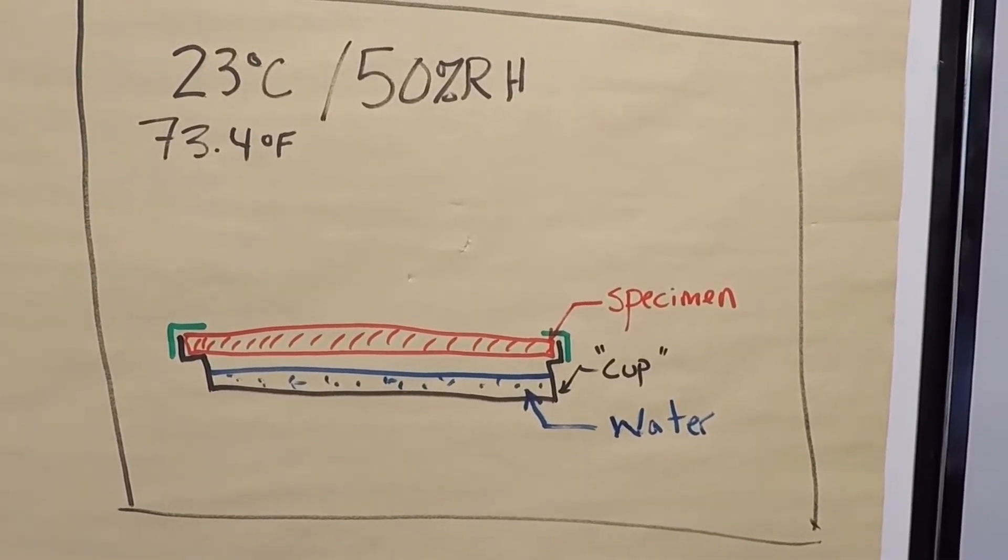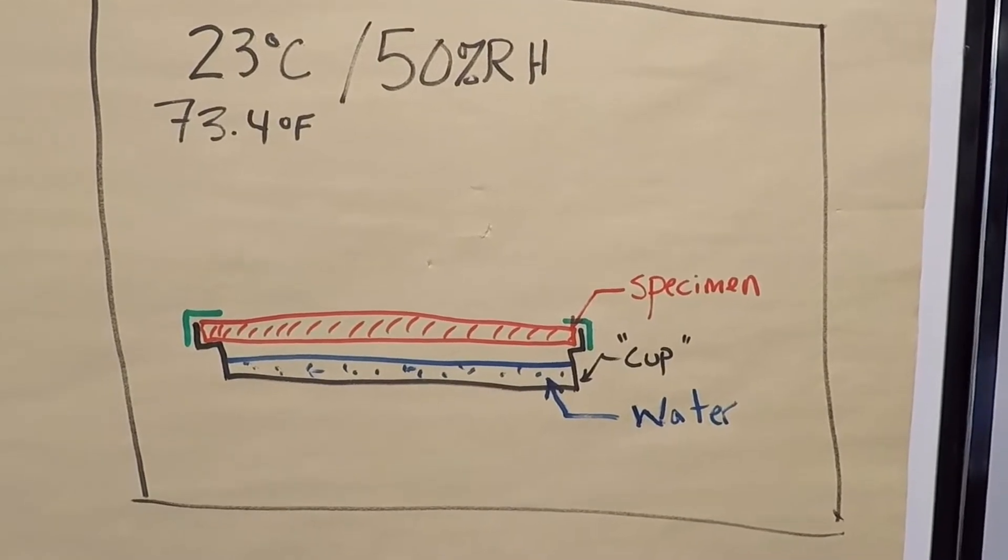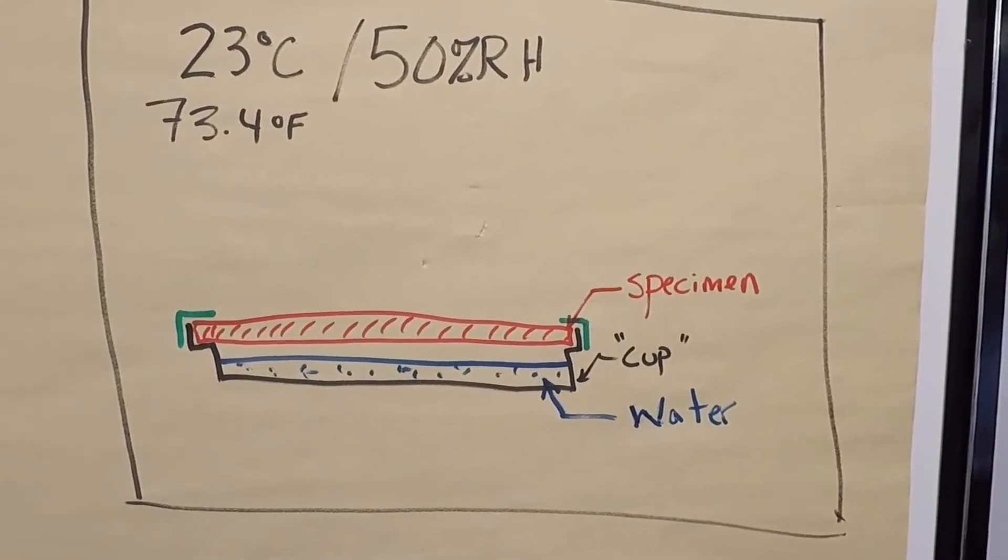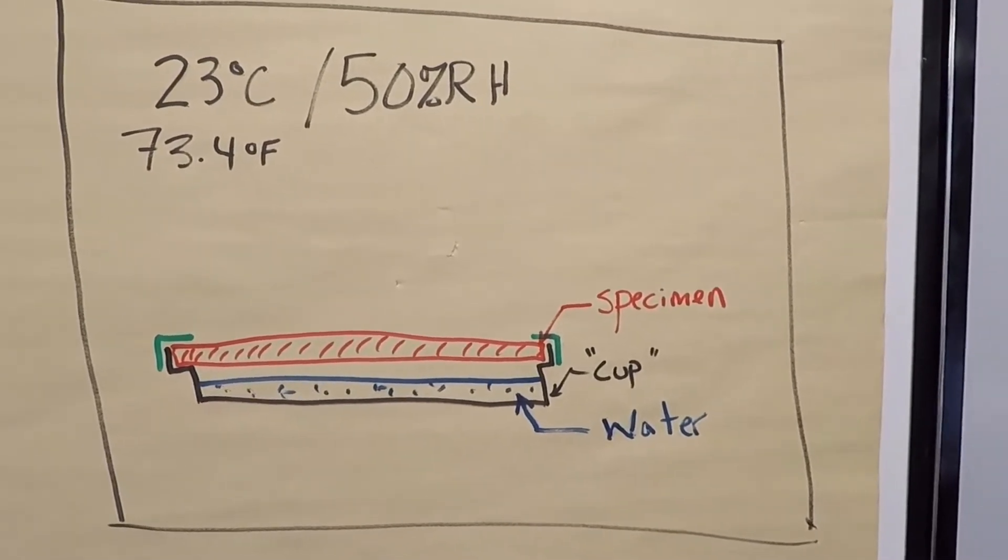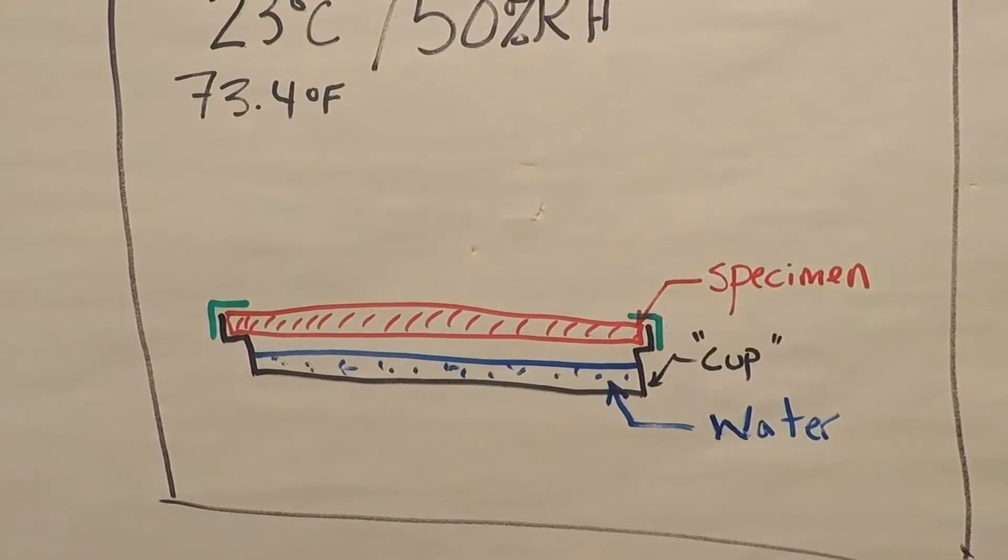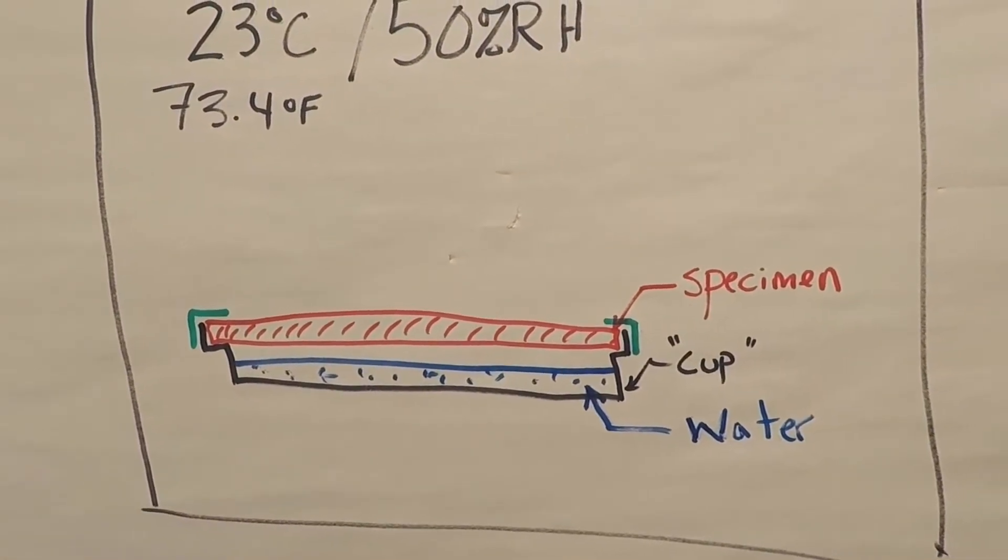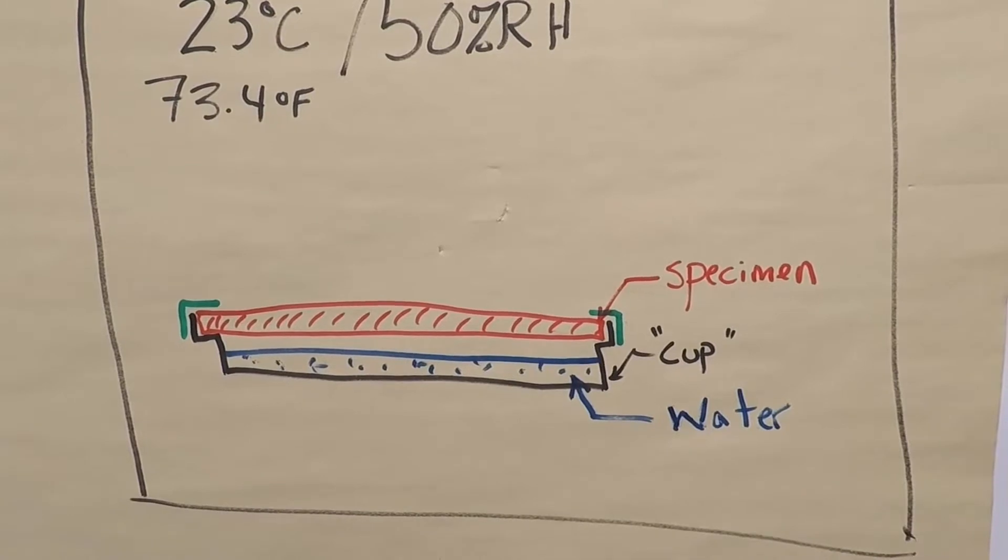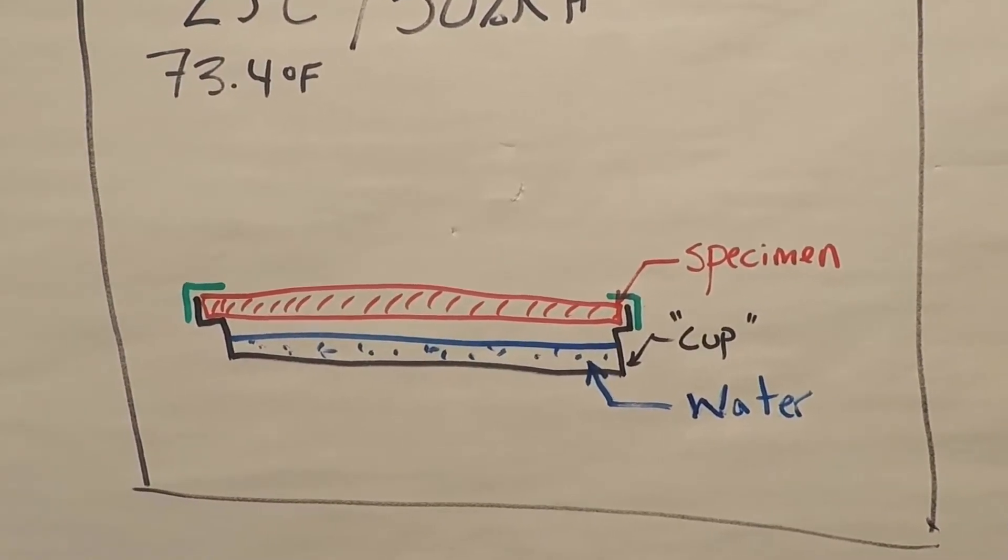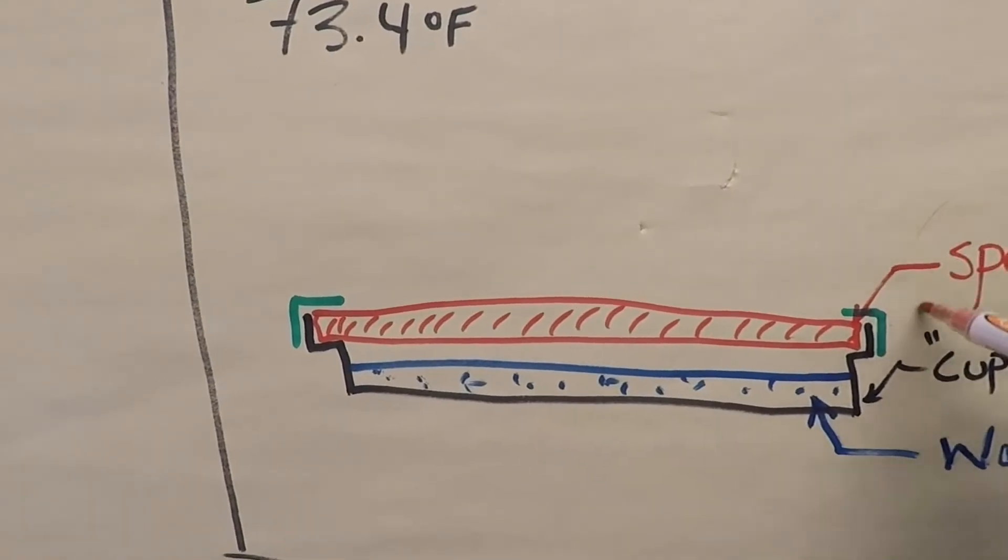You would start with a controlled environment of normally 23 degrees Celsius and 50% relative humidity. There are other conditions you can choose, but that is by far the normal choice used for building related tests. Then we have the specimen itself normally cut into a square or a circular disc, shown right here in this drawing.